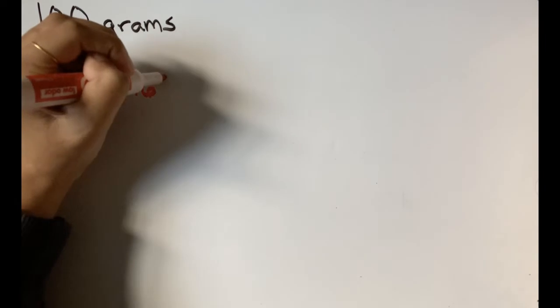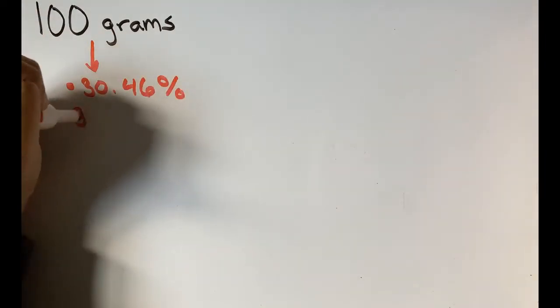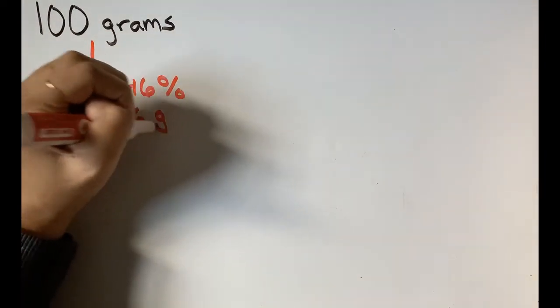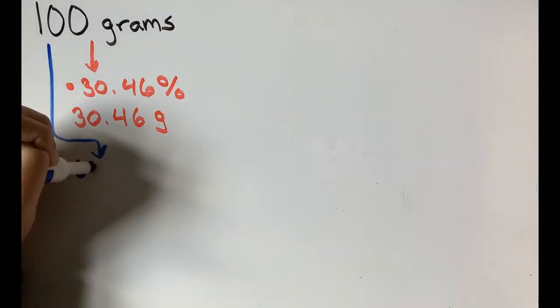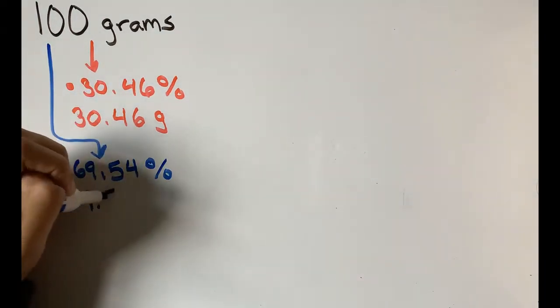So, 30.46% by mass of nitrogen is 30.46 grams, and 69.54% oxygen is 69.54 grams.